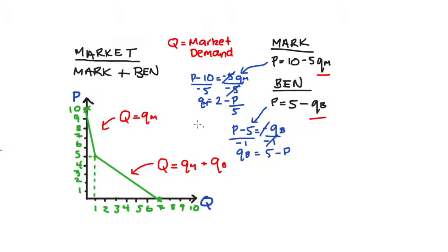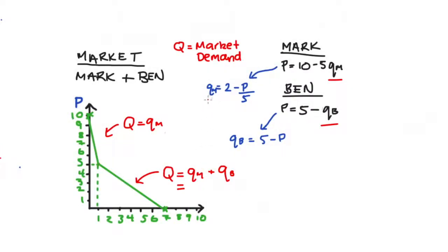So let's substitute these two variables into our market demand equations here. I'll go back to the red color so it's not confusing. For this bottom part, let's substitute Q subscript M and Q subscript B, and we get Q, big Q, equals 2 minus P over 5, that's Mark's demand curve, plus 5 minus P, that's Ben's demand. Can you guys see how I've just substituted in there?